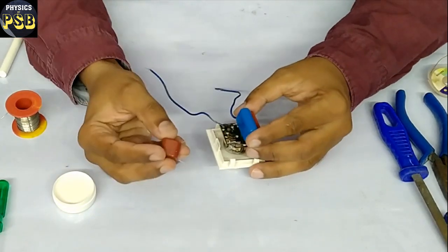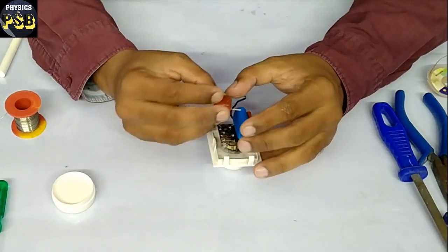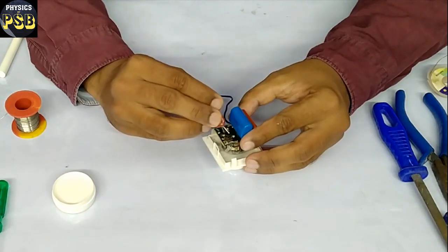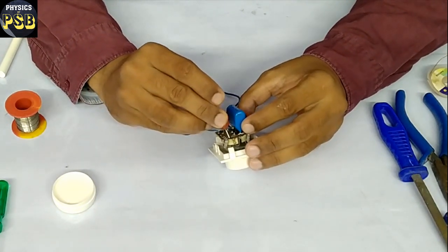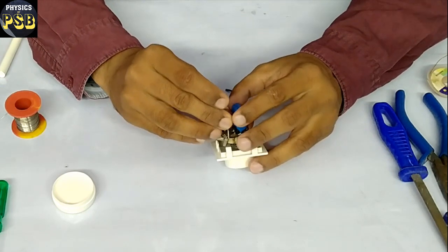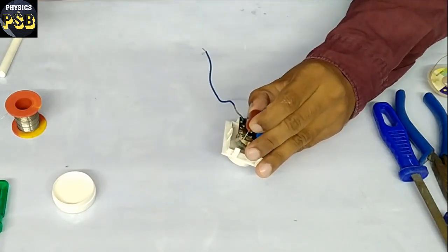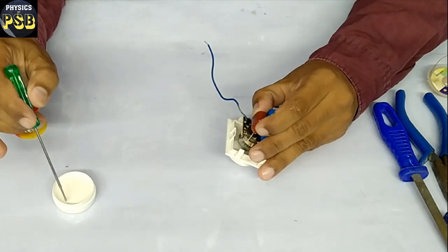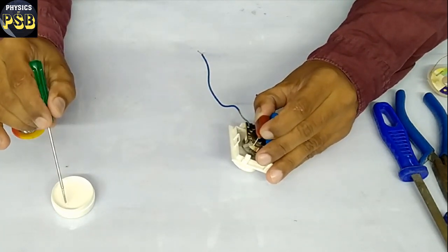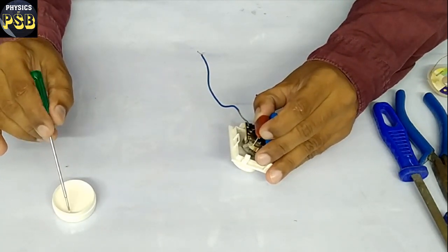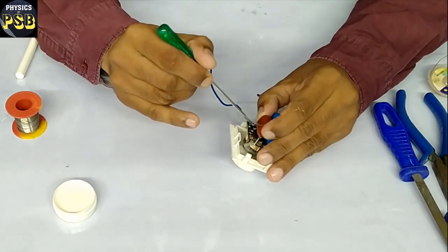Now I will solder this capacitor. I am placing them here. Apply the solder and flux to both the terminals.